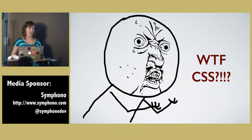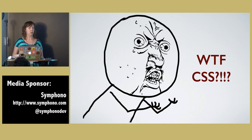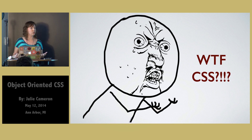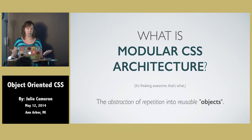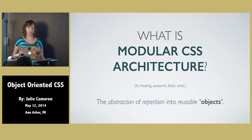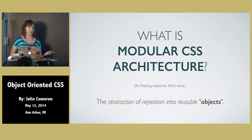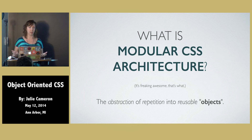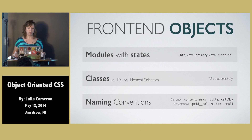Fortunately, we have ways to overcome this in modern front-end development practices, and those are through techniques like object orientation and modularity in the front-end CSS. So let's start with what is modular CSS architecture? Simply put, it's basically the abstraction of repetition into reusable objects. These objects on the front-end are not quite the same as the object-oriented objects you'd work with in a back-end programming language, but let's dig into those a little bit more.